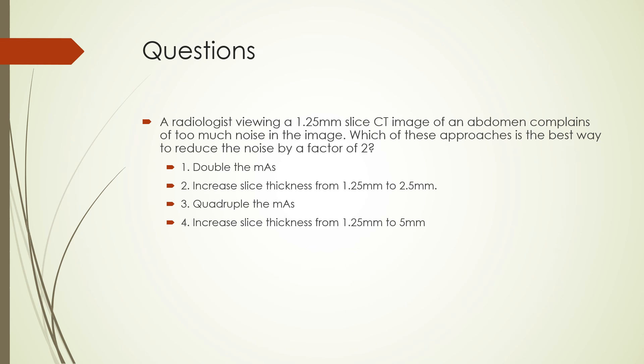Next question. A radiologist viewing a 1.25-millimeter slice CT image of an abdomen complains of too much noise in the image. Which of these approaches is the best way to reduce the noise by a factor of 2? Your choices are: 1. Double the mAs. 2. Increase slice thickness from 1.25 millimeters to 2.5 millimeters. 3. Quadruple the mAs. 4. Increase slice thickness from 1.25 millimeters to 5 millimeters. The correct choice is increase slice thickness from 1.25 millimeters to 5 millimeters. Note also that quadrupling the mAs will reduce the noise by a factor of 2, but that will lead to an increase in patient dose, so that is not the best choice.